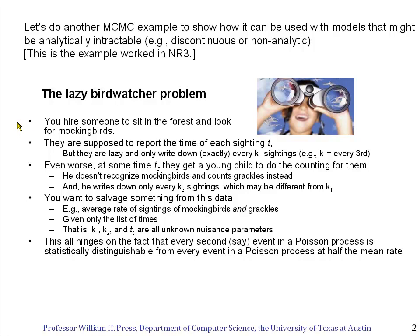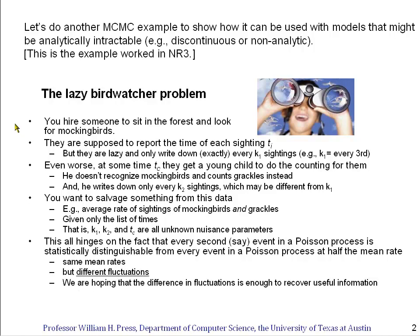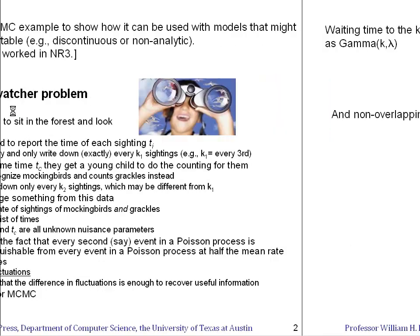The fact that you can do this at all hinges on the fact that this is Poisson process data. Even if the averages of two Poisson processes are the same, you could distinguish where every third event is written down from where every first event is written down because the fluctuations in the data will be different. This is a perfect problem for Markov chain Monte Carlo, because it's easy to write down the forward statistical model but hard to analytically invert it.